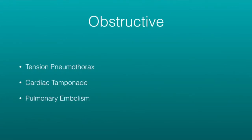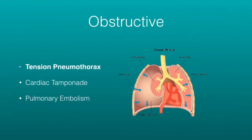Obstructive shock is when something has blocked or obstructed blood flow. This could be a pneumothorax, a tamponade, or a pulmonary embolism. With a tension pneumothorax, you have a collapsed lung with a lot of air building up inside the chest cavity, causing incredible pressure. So much pressure that blood cannot return to the heart, causing a decrease in preload, which lowers cardiac output and blood pressure. The fix is to get the air out of the chest.